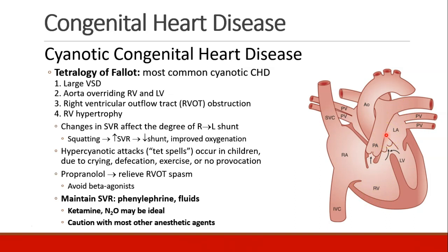Patients develop hypercyanotic attacks, commonly called tet spells, mostly in children and young adults. Crying, defecation, and exercise are all things that can lead to a tet spell, although sometimes they come about for no reason at all. We can give these patients propranolol, which may help relieve spasm of the outflow tract, and we want to avoid beta agonists. The main management pearls are to maintain adequate SVR to minimize shunting, keep them well hydrated, and ketamine and nitrous may actually be very good anesthetics for these patients. We should be cautious with most other anesthetic agents, again because they drop SVR.